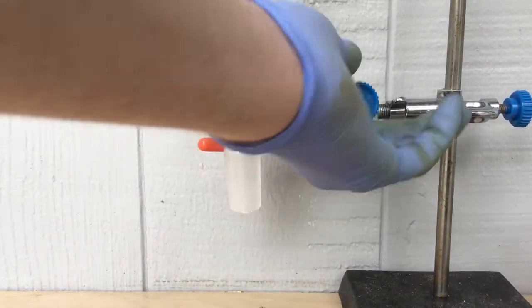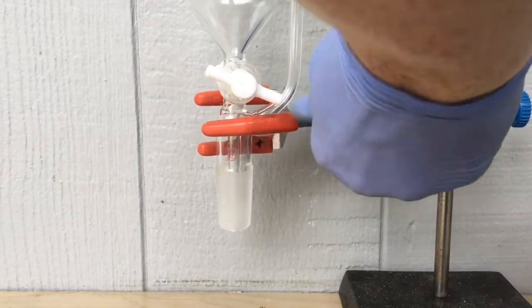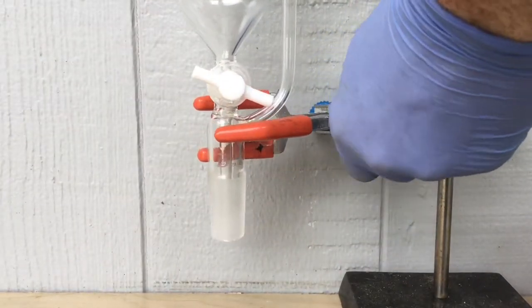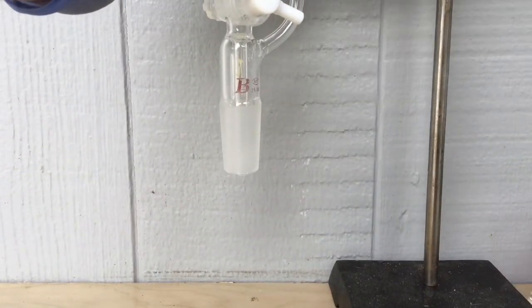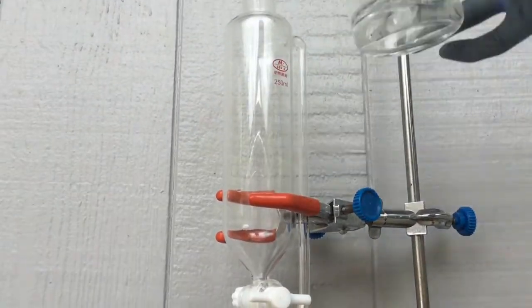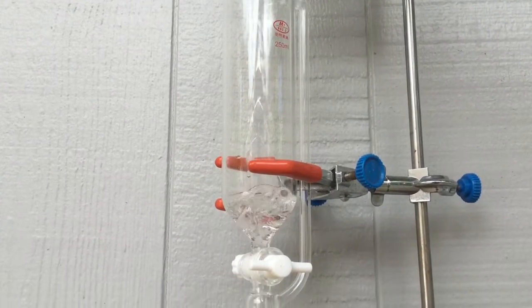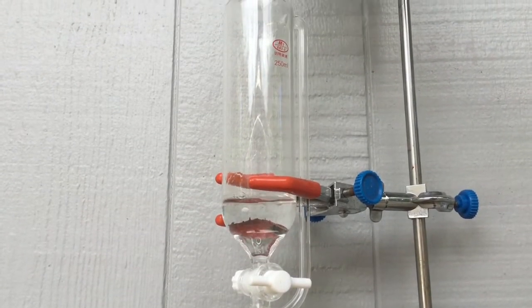Here I'm also setting up an addition funnel because I don't have a proper burette to carry out this titration, but whatever, we can make do with that. Now I'm adding the one molar sodium hydroxide solution and I begin dripping it into our sulfuric acid solution.